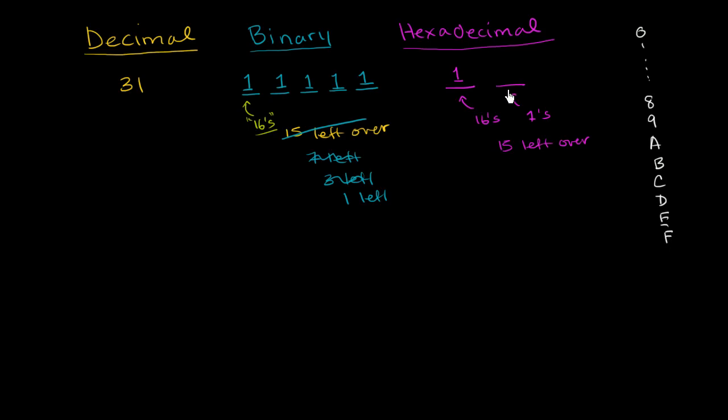So if you want to represent 15 ones, you literally just put an F here. So this might not look like a number to you, but in hexadecimal it is. 1F. This is hexadecimal for 31. You have 1, 16, and you have 15 ones. And this is the symbol for 15.